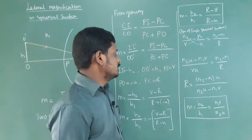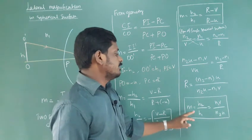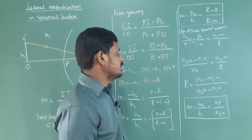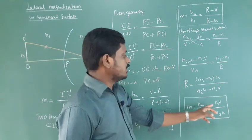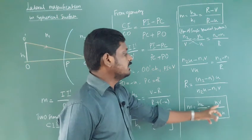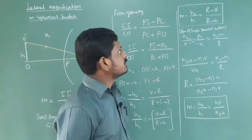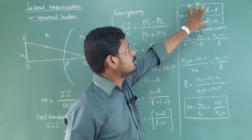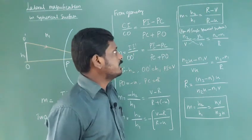We can find magnification, lateral magnification, using height of object, height of image, and also from the refractive indices of two media, object distance and image distance. If we know radius of curvature, we can use R minus V by R minus U.